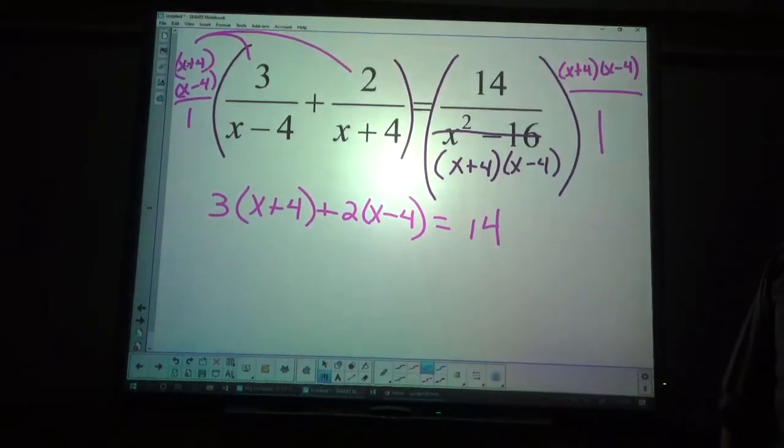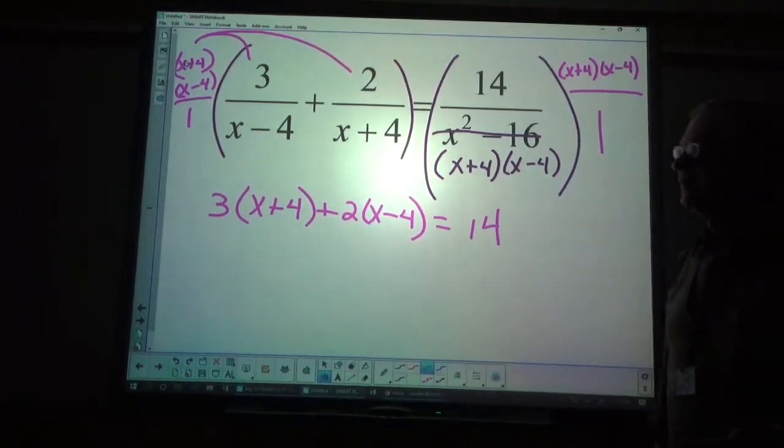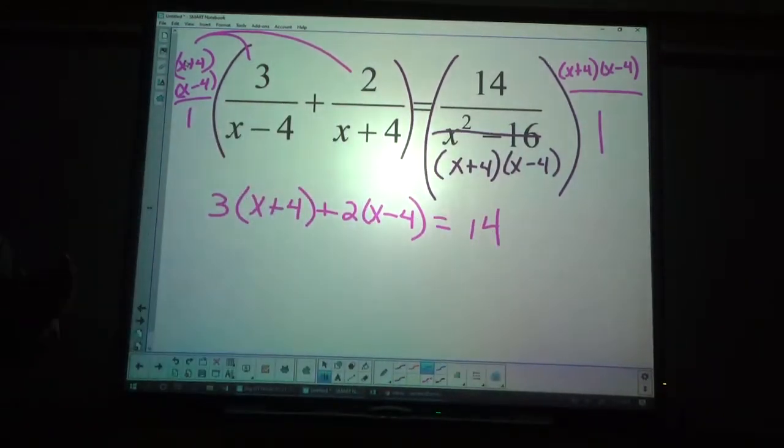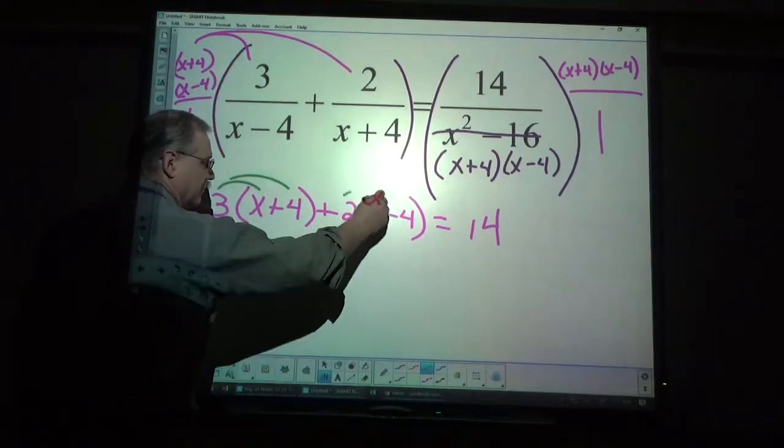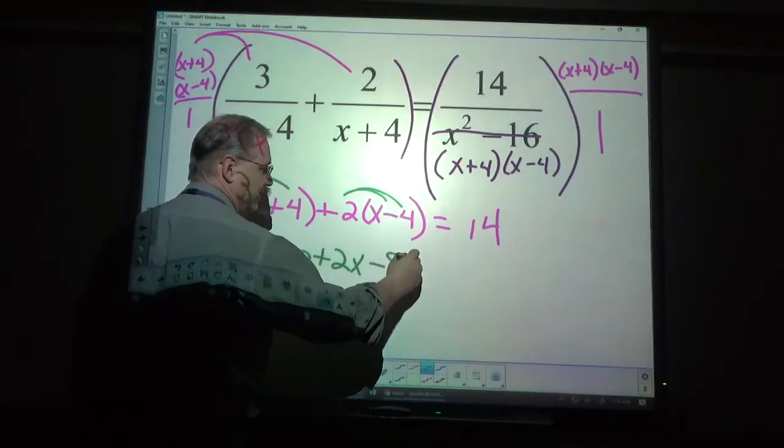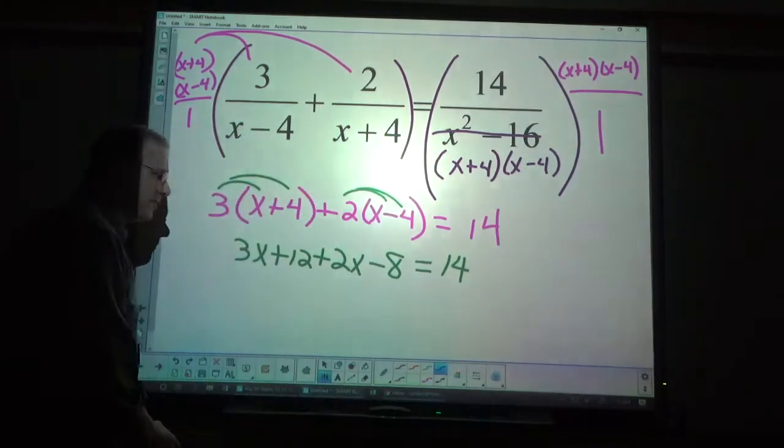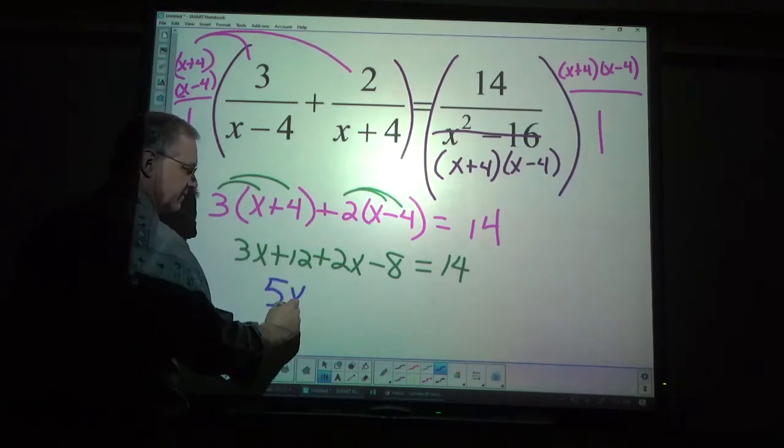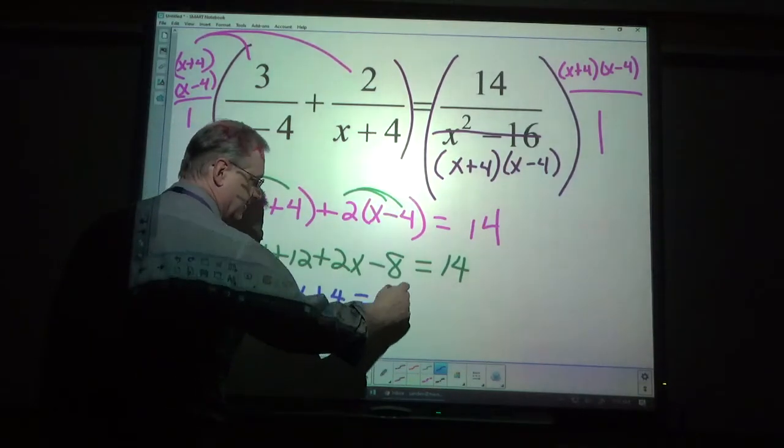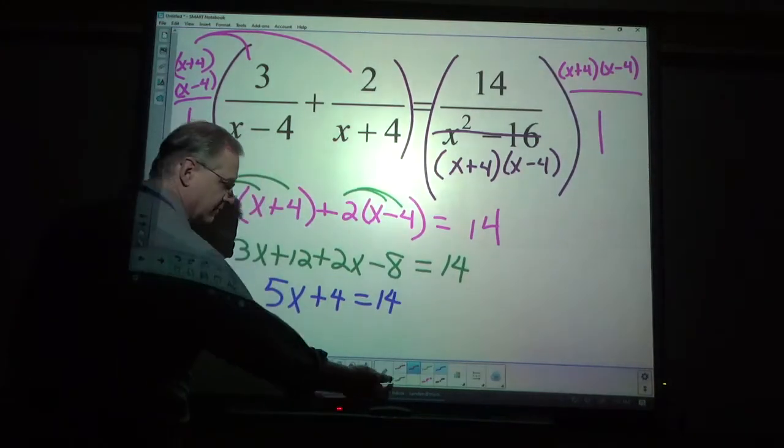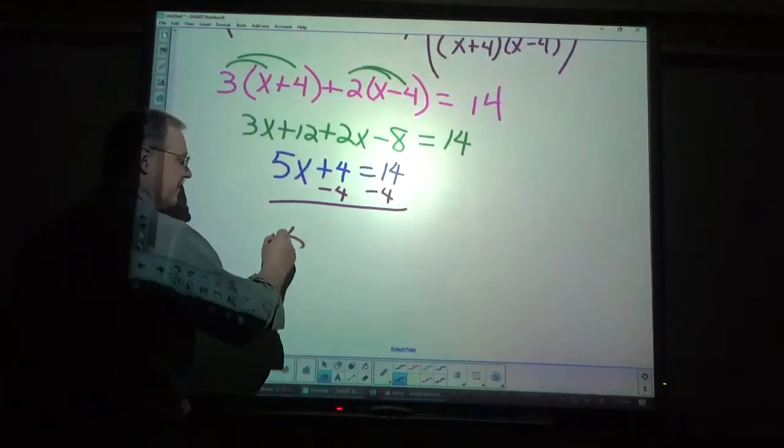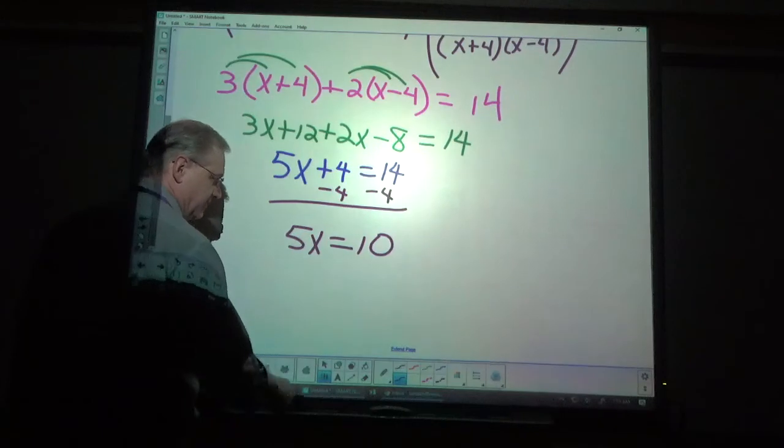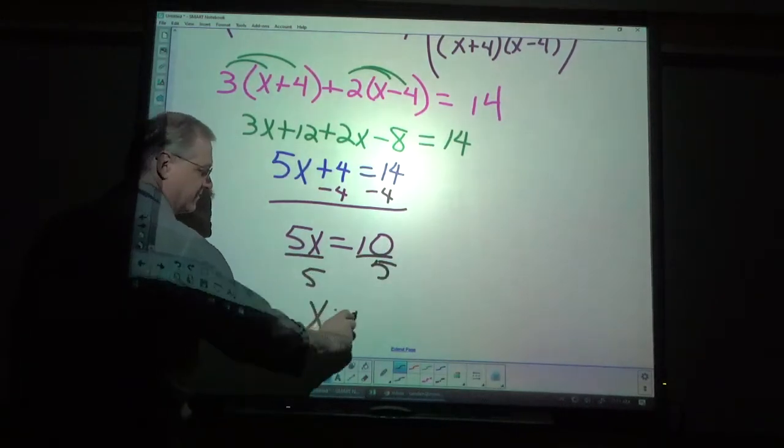So far, we've had no real difficulty because all of our variables are only to the first power. Our next example, however, I believe that will change. So, I'm going to distribute 3x plus 12 plus 2x minus 8 equals 14. I'll combine like terms. 5x plus 4 equals 14. This looks like it's going to come out nice. I'm going to subtract 4. 5x equals 10. It sure does. Divide by 5. x is 2.